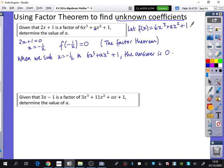Because we need to find out what a is, if we sub x equals minus 1/2 in, the answer is 0. So I'm going to do 6(-1/2)³ + a(-1/2)² + 1 = 0, because this is what f(-1/2) is.